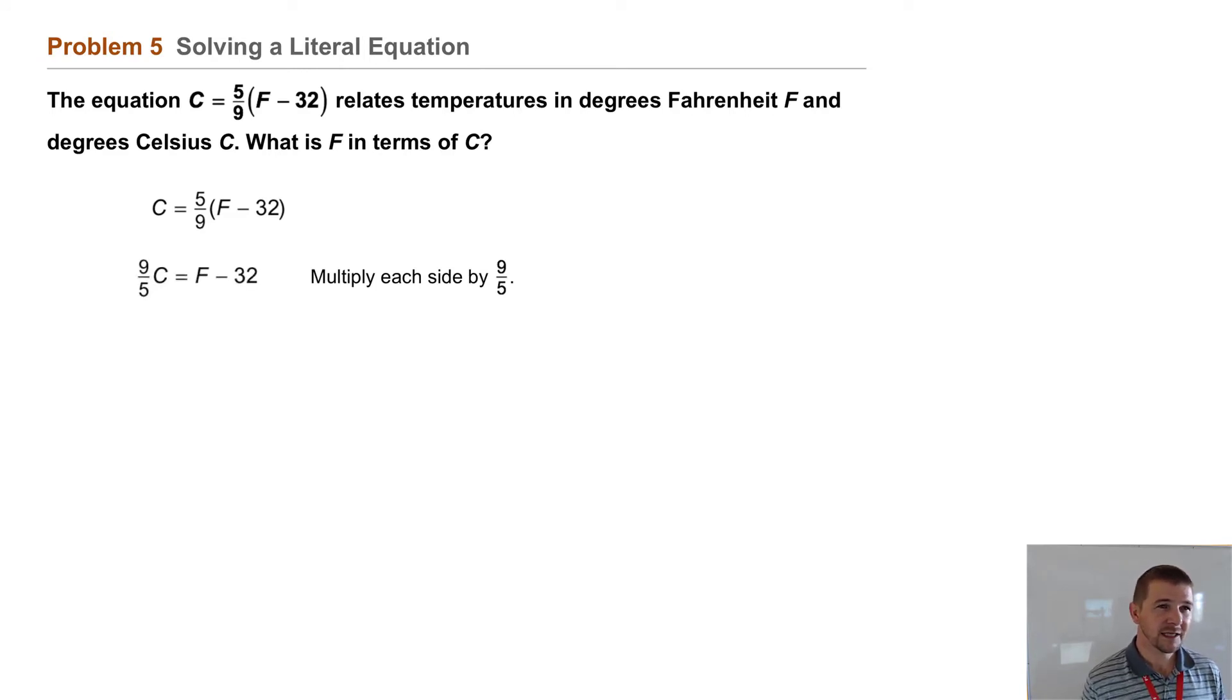9/5 times C equals F minus 32. Then we add 32 to each side. 9/5C plus 32 equals F. And finally, we use the symmetric property to rewrite with our variable F on the left to get the equation F = 9/5C + 32.